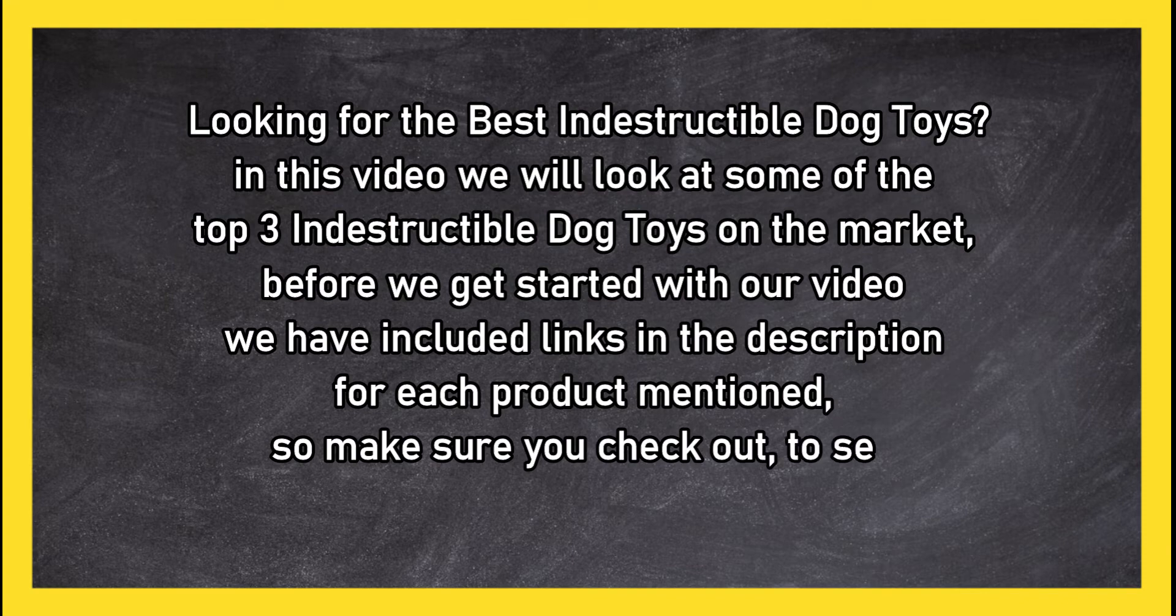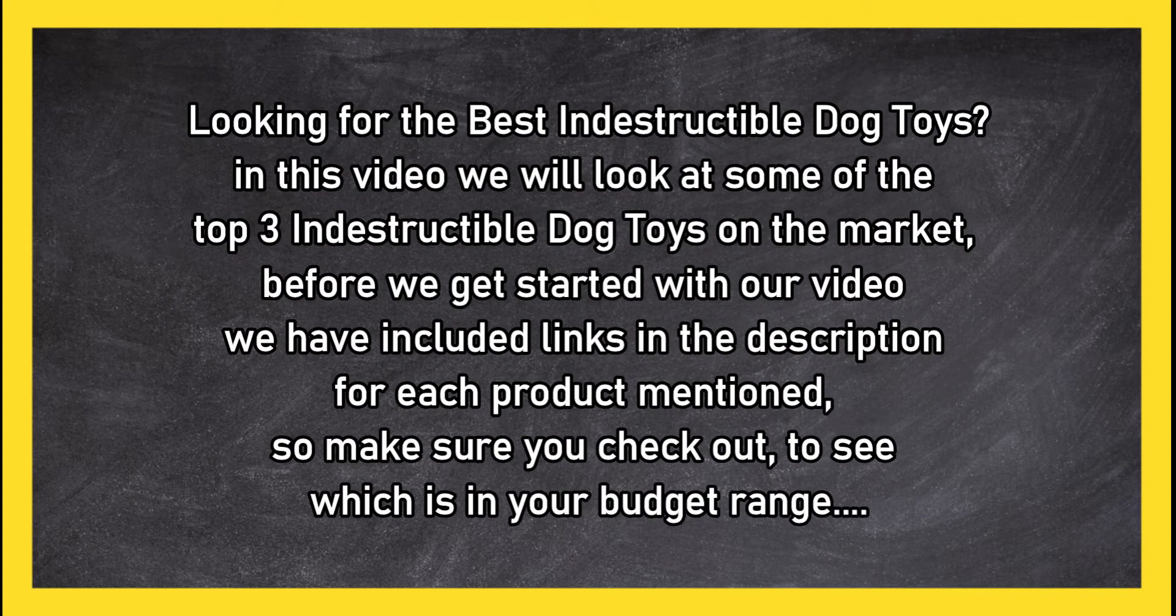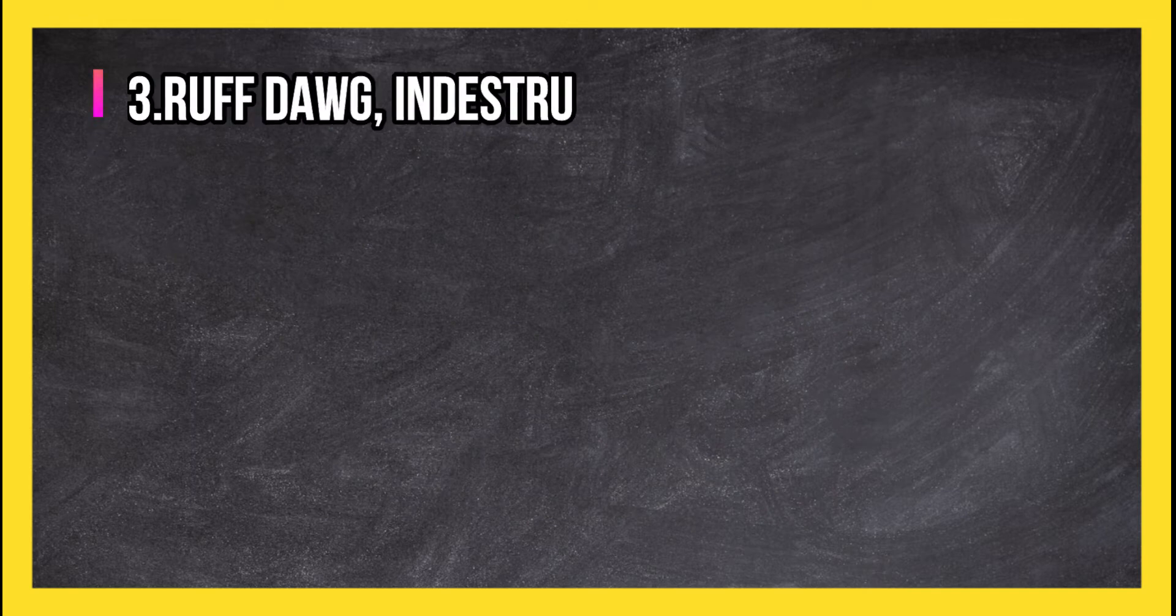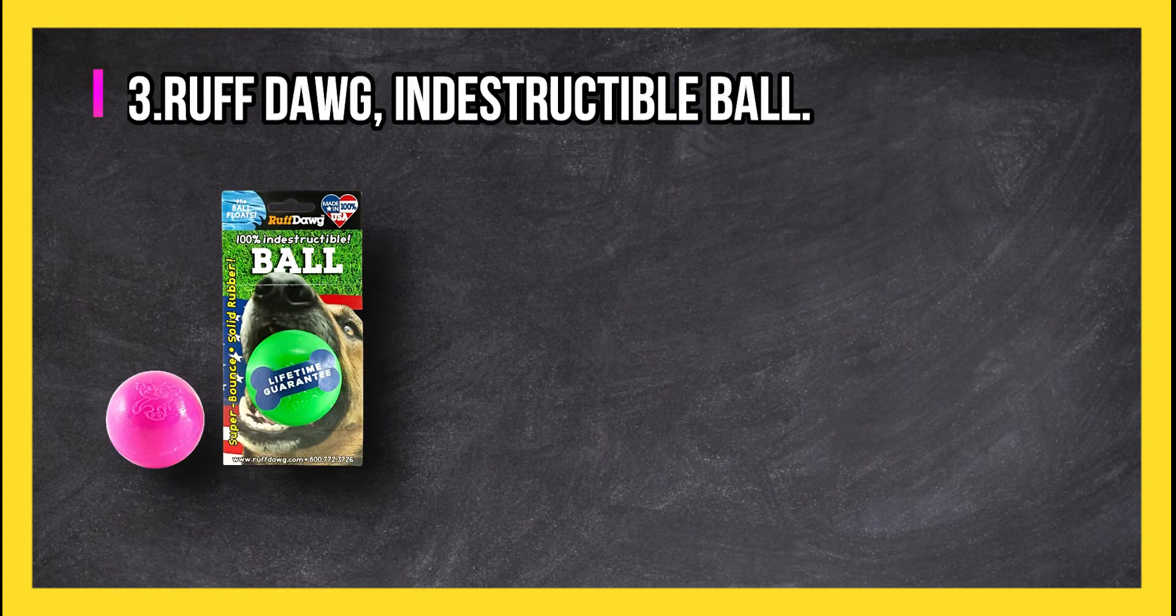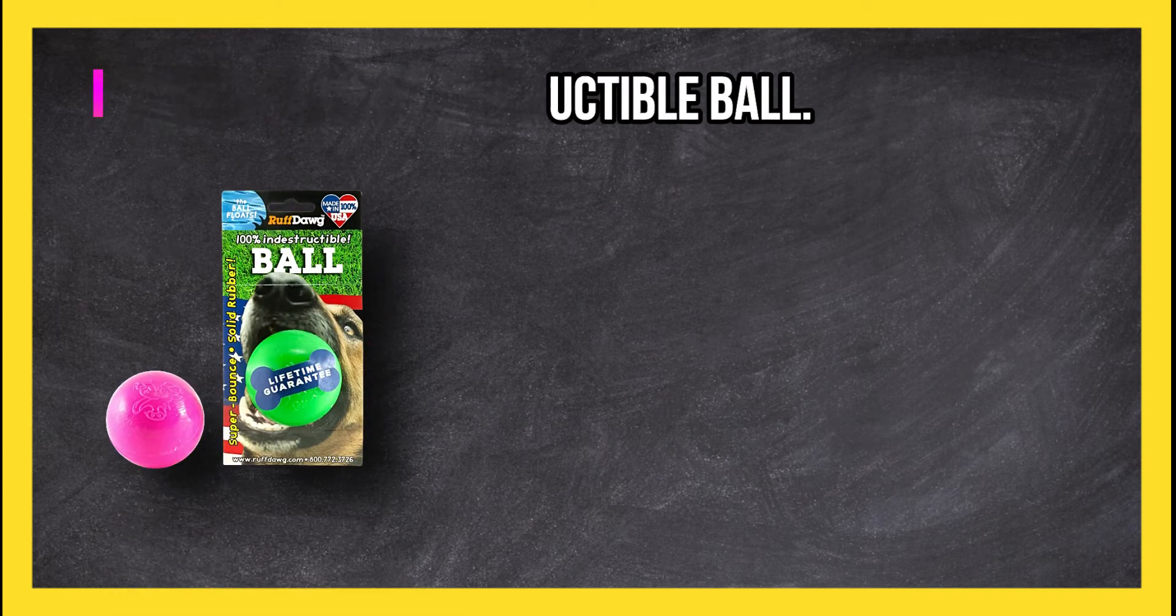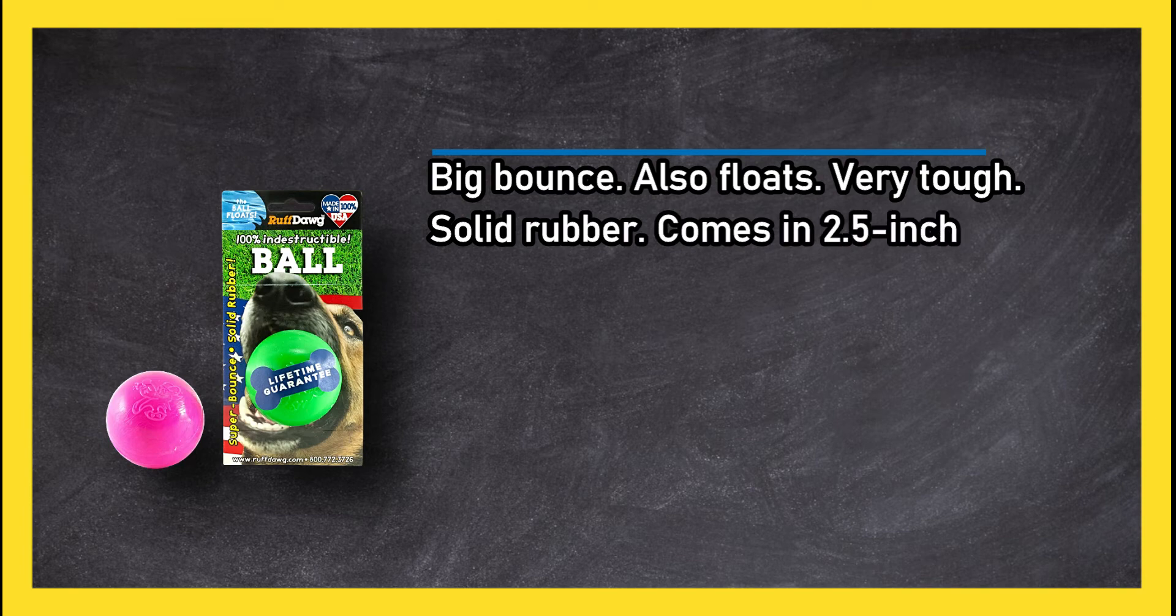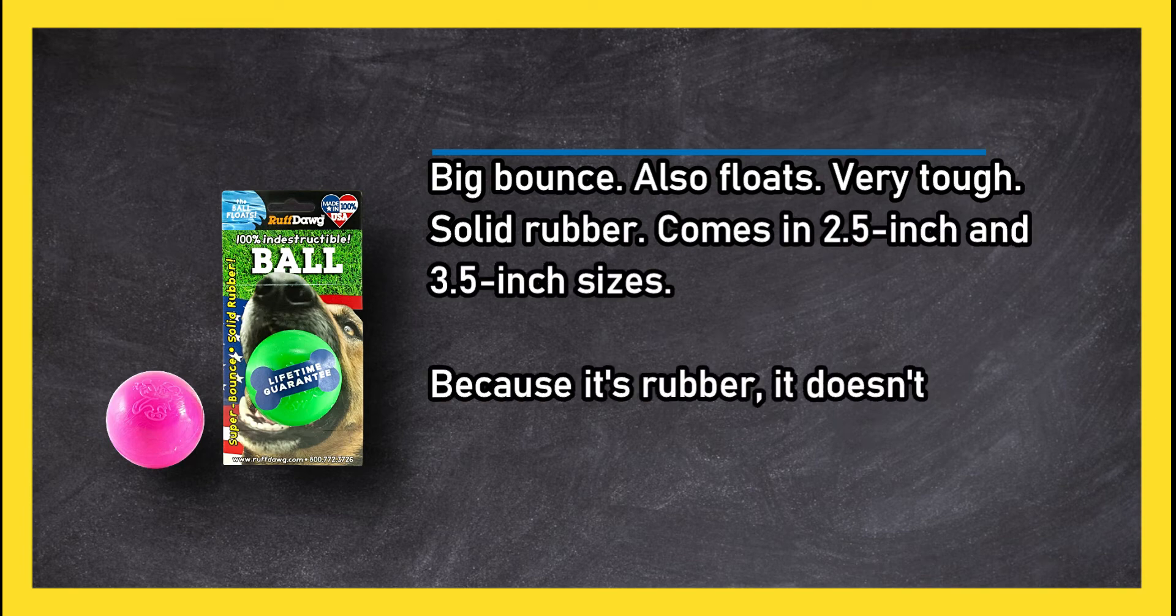Make sure you check out to see which is in your budget range. At number three, Rough Dog Indestructible Ball: big bounce, also floats, very tough, solid rubber, comes in 2.5 inch and 3.5 inch sizes.